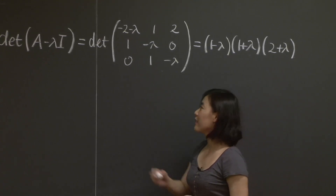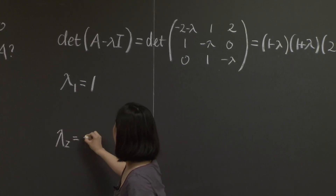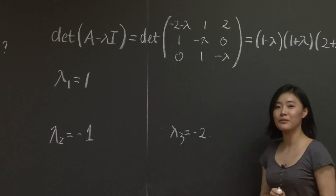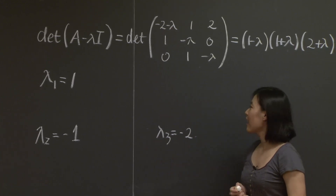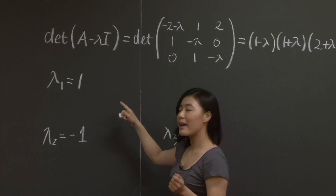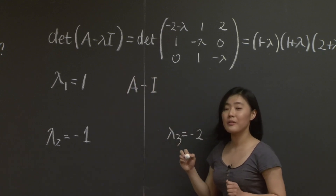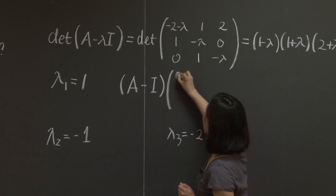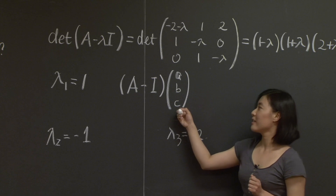These are the eigenvalues we're looking for: lambda 1 equals 1, lambda 2 equals negative 1, and lambda 3 equals negative 2. Now what we need is the eigenvector corresponding to each eigenvalue. For lambda 1, the eigenvector is in the null space of A minus lambda_1 times I, so A minus I. We're looking for a column vector [A, B, C] such that this matrix multiplied by [A, B, C] gives zero.